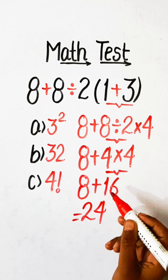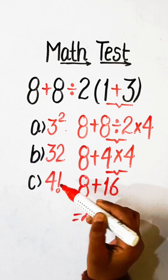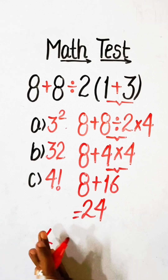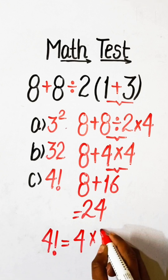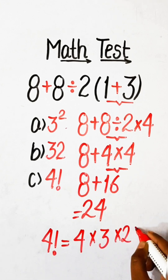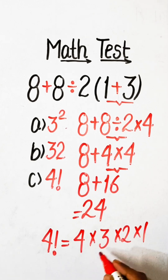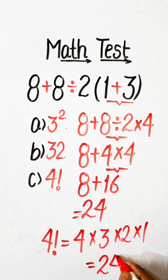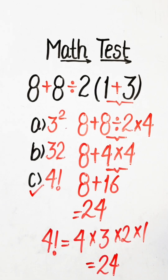In the options we have 3 squared which equals 9, and 32, or 4 factorial. The value of 4 factorial is 4 multiplied by 3 multiplied by 2 multiplied by 1. Four threes are 12, twelve twos are 24. So the value of 4 factorial is 24. Our correct answer is Option C, 4 factorial. If you like my videos, please like, share, and subscribe to the channel.